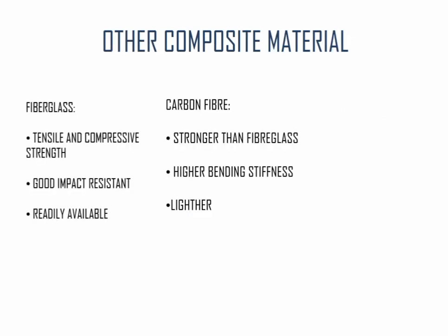There are other composite materials in the aircraft structure: fiberglass and carbon fiber. Fiberglass has tensile and compressive strength, good impact resistance, and is readily available. Carbon fiber is stronger than fiberglass, with higher bending stiffness and lighter weight. A disadvantage of fiberglass is that it is very heavy, while carbon fiber is very brittle, which is also a disadvantage.